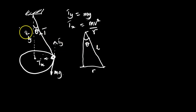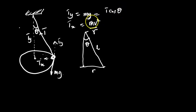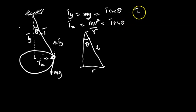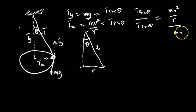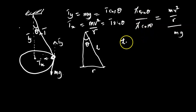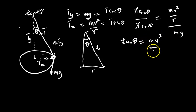When resolving this force, Ty equals T cosθ and Tx equals T sinθ. So forming the ratio: T sinθ / T cosθ equals (mv²/r) / mg. T cancels T, and sinθ / cosθ is tanθ, so tanθ equals mv²/r times 1/mg.